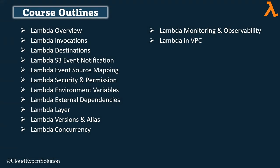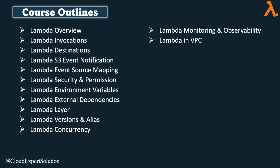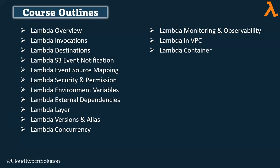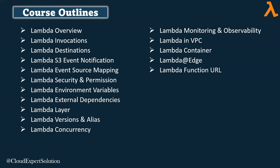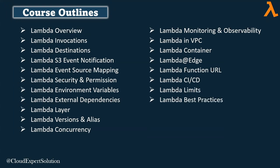Then we will review different Lambda monitoring and observability metrics, service maps, and how to triage Lambda errors. We will cover Lambda networking concepts and when and why you should launch a Lambda function inside your VPC. We will launch Lambda inside our VPC and test connectivity. Then we will cover Lambda containers — the latest improvement in AWS Lambda — and review how you can run container images as a Lambda function. We will also review Lambda at Edge, Lambda function URLs, end-to-end CI/CD deployment for Lambda, all Lambda limits you should know, and Lambda best practices for production and critical application use cases.